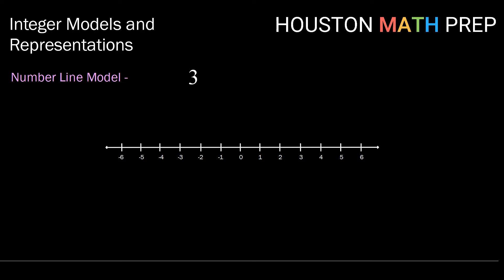Let's model the number 3. Starting by finding 0, since this is a positive 3, we're going to model 3 in the positive or right hand direction. So there is our model for 3.